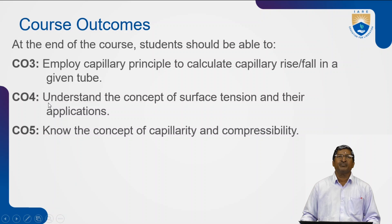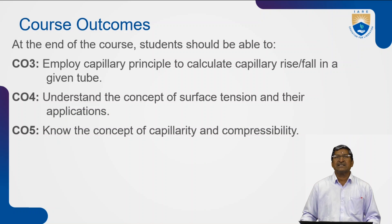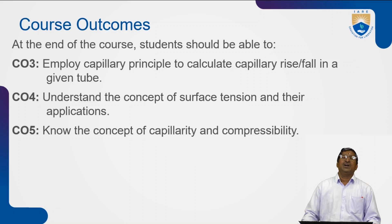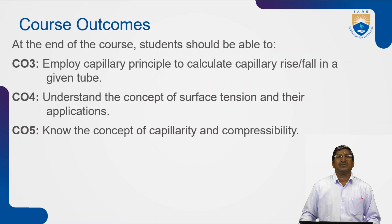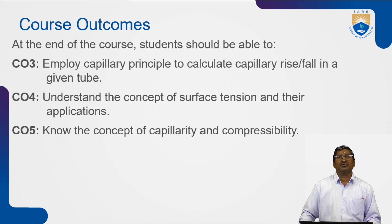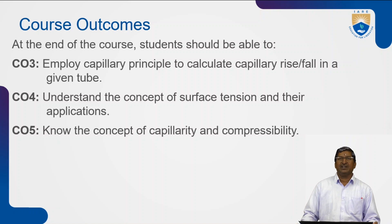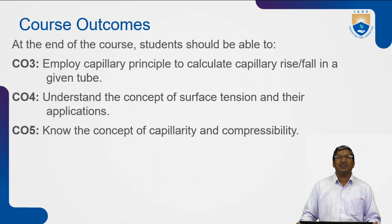Students should know the capillarity principles and be able to calculate the capillary rise and fall — what is the amount of rise in a given small tube. Course Outcome 4, CO4: students should be able to understand the concept of surface tension — what is the concept behind surface tension and where it is applicable. Course Outcome 5: students should be able to know the concept of capillarity and compressibility.